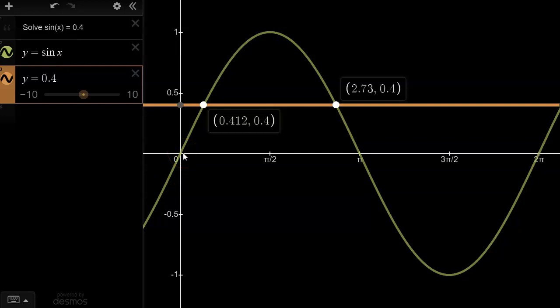These are found at the points of intersection, and the x-coordinates, in this case x equals 0.412 and x equals 2.73, represent the solutions, or the roots as we sometimes call them, of the equation sine x is equal to 0.4.